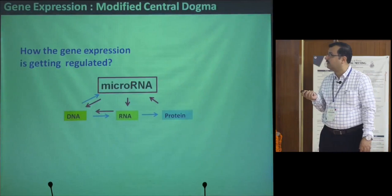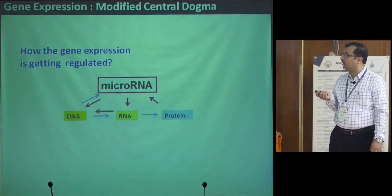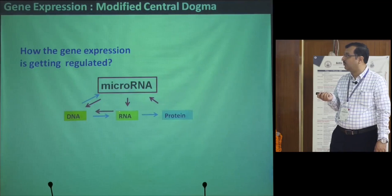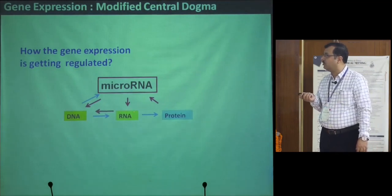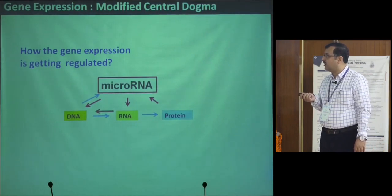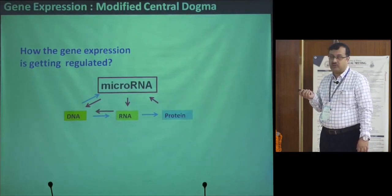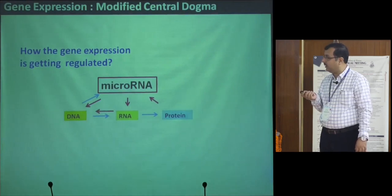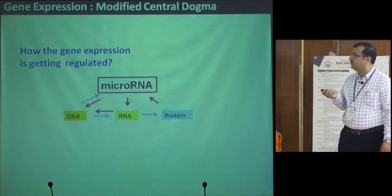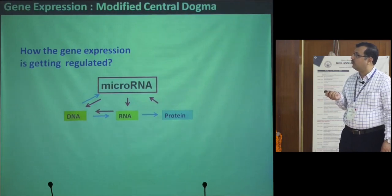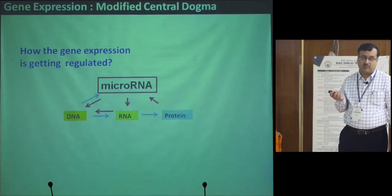With the discovery of microRNA, one can think that microRNA can regulate gene expression at the DNA level by regulating the transcriptional process, but primarily it also acts on the RNA to regulate protein synthesis. The protein synthesized from the RNA also works on and regulates the microRNA. The microRNA itself gets transcribed from the DNA, so it plays an important role in microRNA regulation.